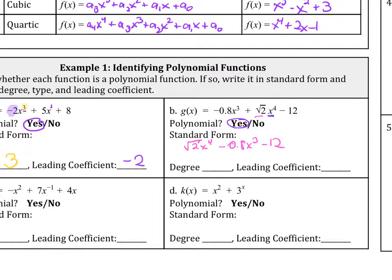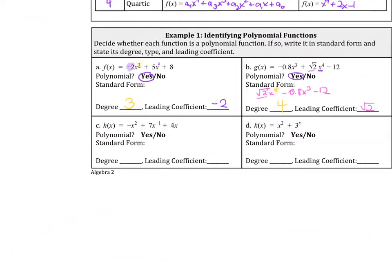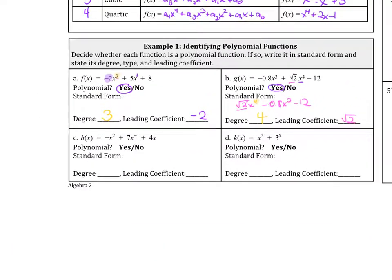Our degree is this number up here, this number at the top, the 4. And so therefore, the degree is 4. The leading coefficient in this case is this square root of 2.